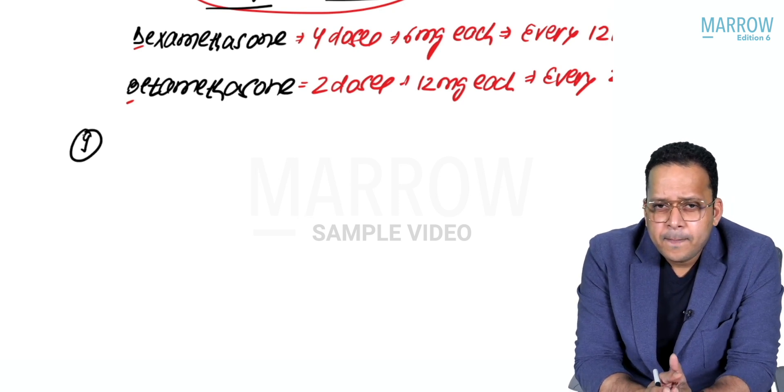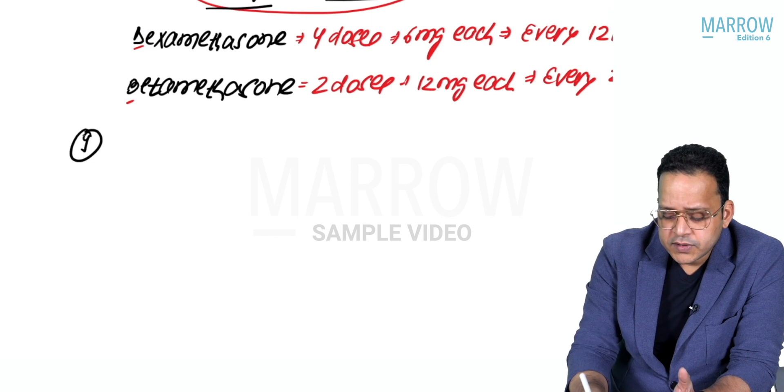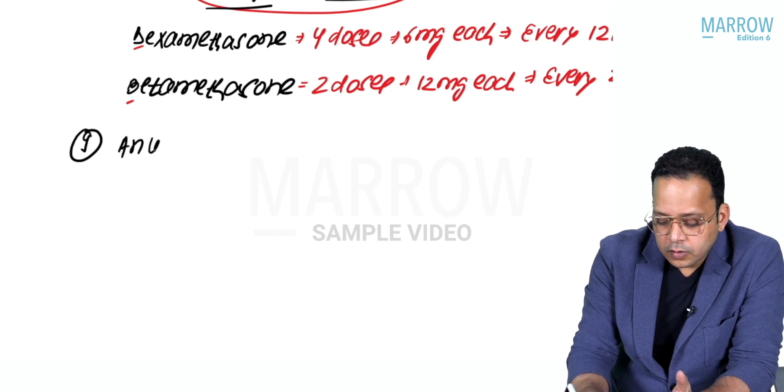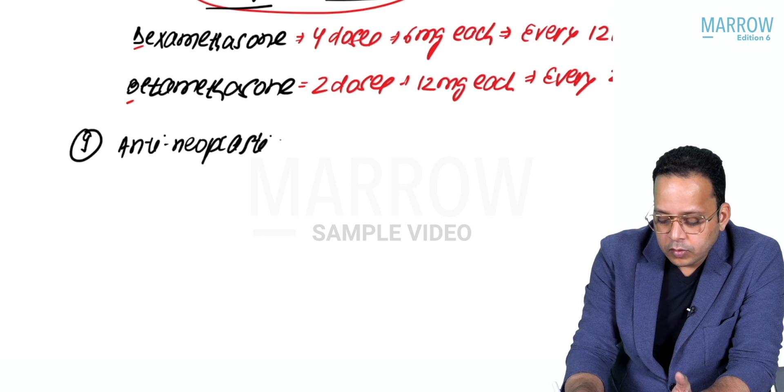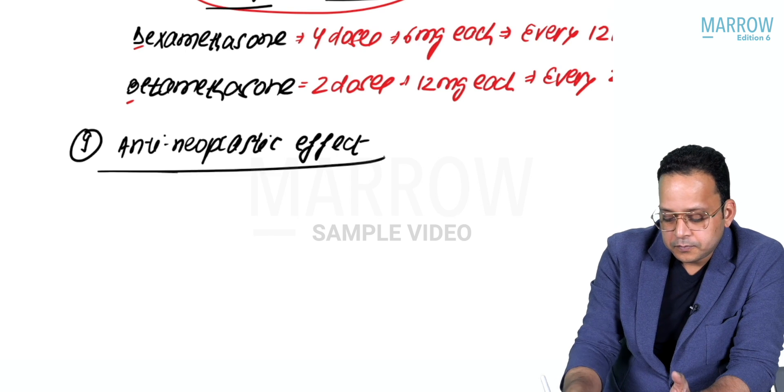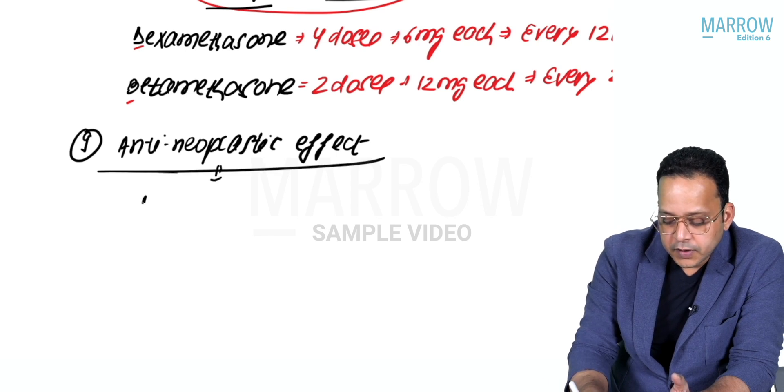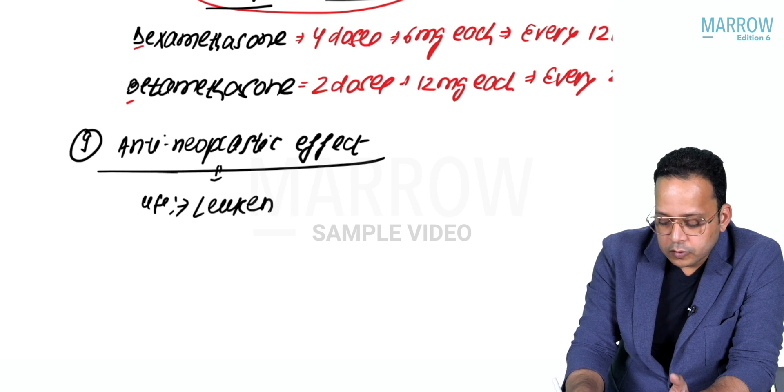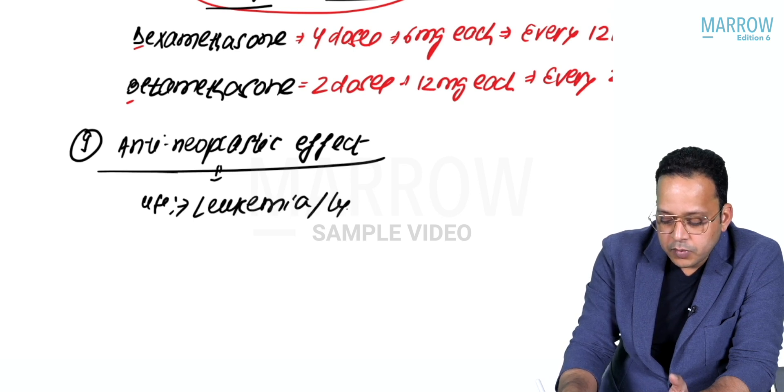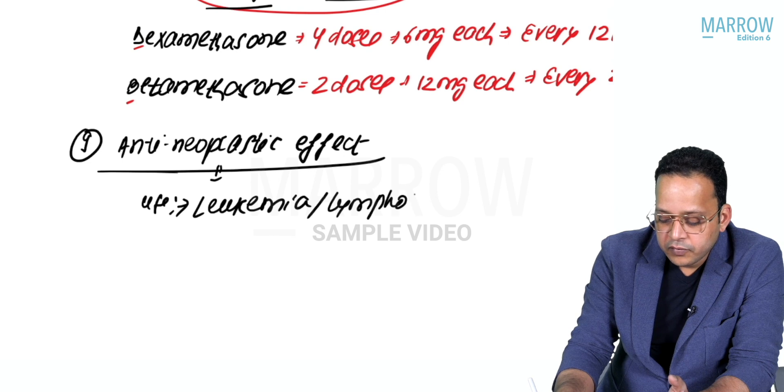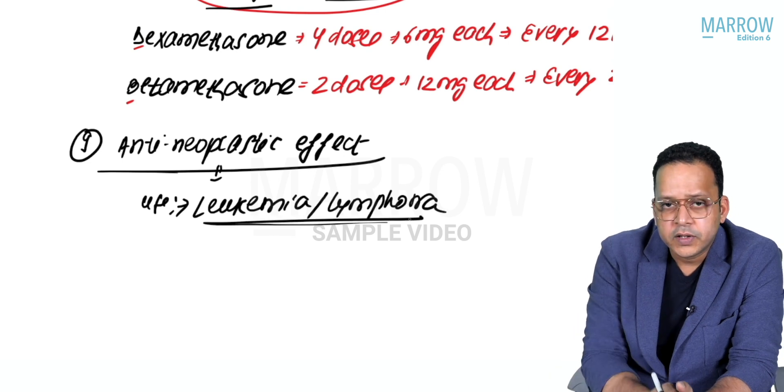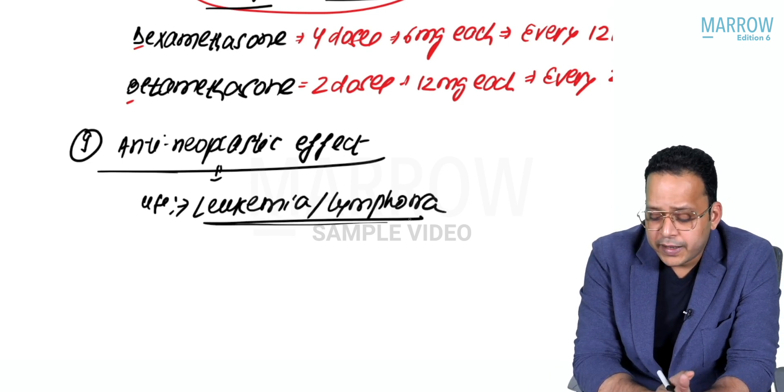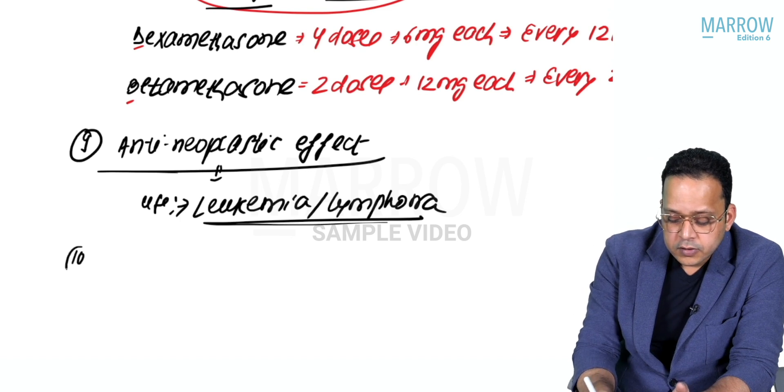Number nine: steroids have anti-neoplastic effect or anti-cancer effect. They're mostly used in leukemia and lymphoma. I've covered the uses of steroids in leukemia and lymphoma in the section of anti-cancer drugs.